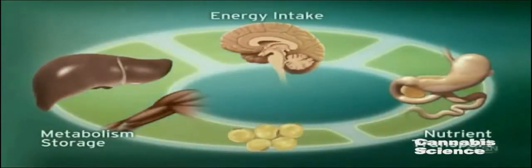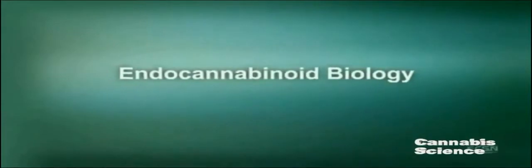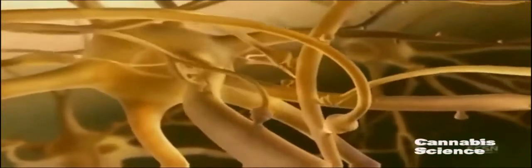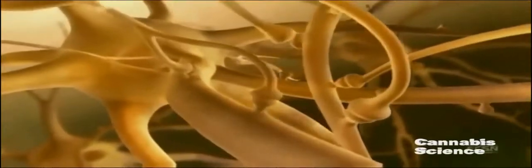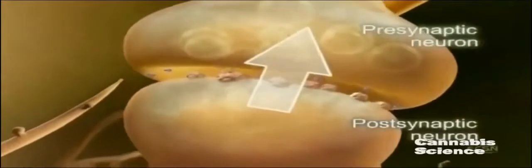Within the brain, CB1 receptors are among the most abundant G protein-coupled receptors. However, in contrast to classical signaling where information travels from pre to post-synaptic neurons, the ECS uses retrograde signaling. The information travels from post to pre-synaptic neuron. Let's take a closer look at this mechanism using a glutamatergic neuron model.